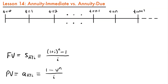Welcome back. Today we're going to be talking about annuity immediate versus annuity due. So far when we have been looking at annuities or calculating annuities, whether that be the future value or the present value, we have been calculating what is called an annuity immediate. You may recognize these two formulas: the future value of an annuity immediate, and the present value for an annuity immediate.